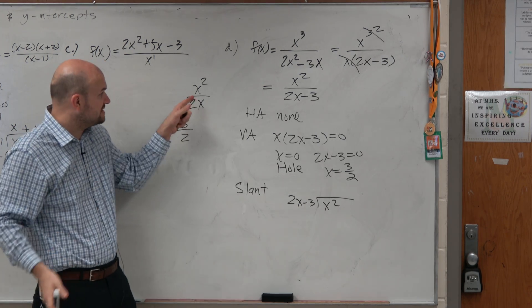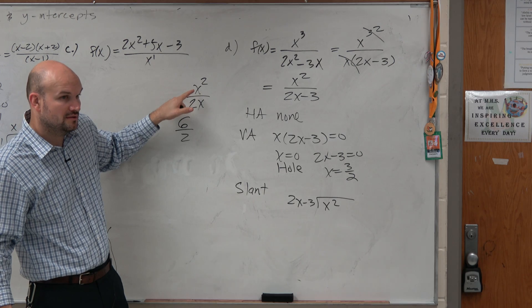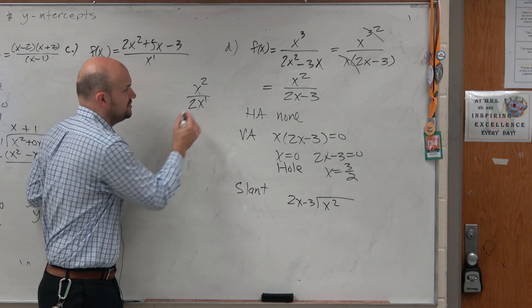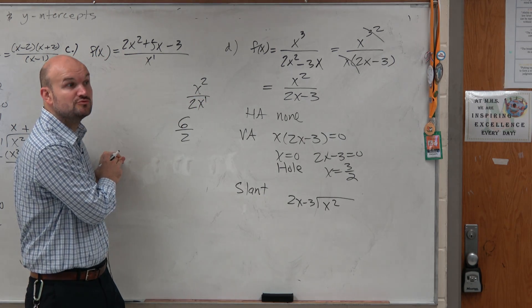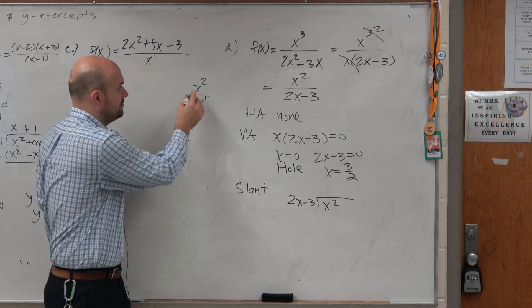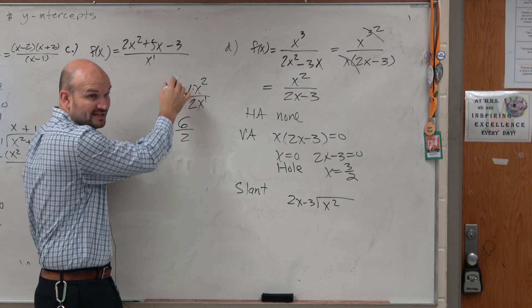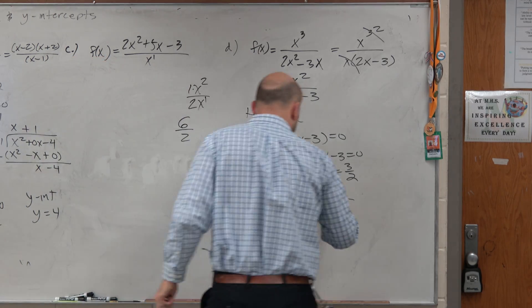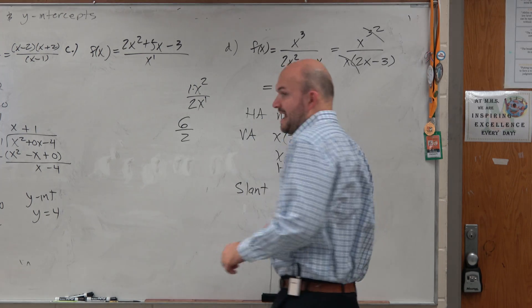Now, using the rules of exponents, can we simplify this at all? Well, what happens when you divide exponents? You subtract the powers, right? So this is really a 1. We can't do anything with the numbers. So this just remains 1 half x.